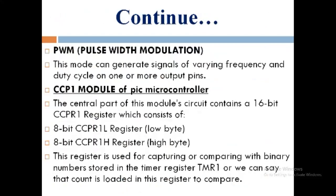The CCP-1 module of PIC Microcontroller: the central part of this module's circuit contains a 16-bit CCPR1 register which consists of an 8-bit CCPR1L register (low byte) and an 8-bit CCPR1H register (high byte). This register is used for capturing or comparing with binary numbers stored in the timer register TMR1, or we can say that the count is loaded in this register to compare.